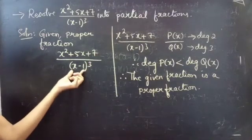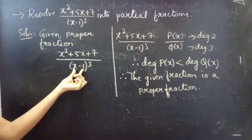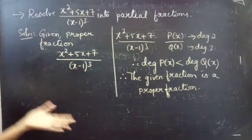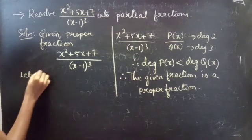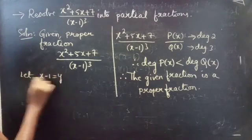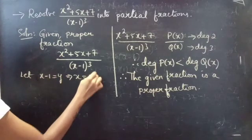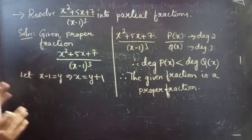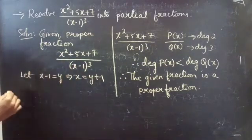Now we will consider the denominator. We treat the linear polynomial x − 1 and set x − 1 = y. Then x = y + 1. Now we will simply replace x in terms of y.